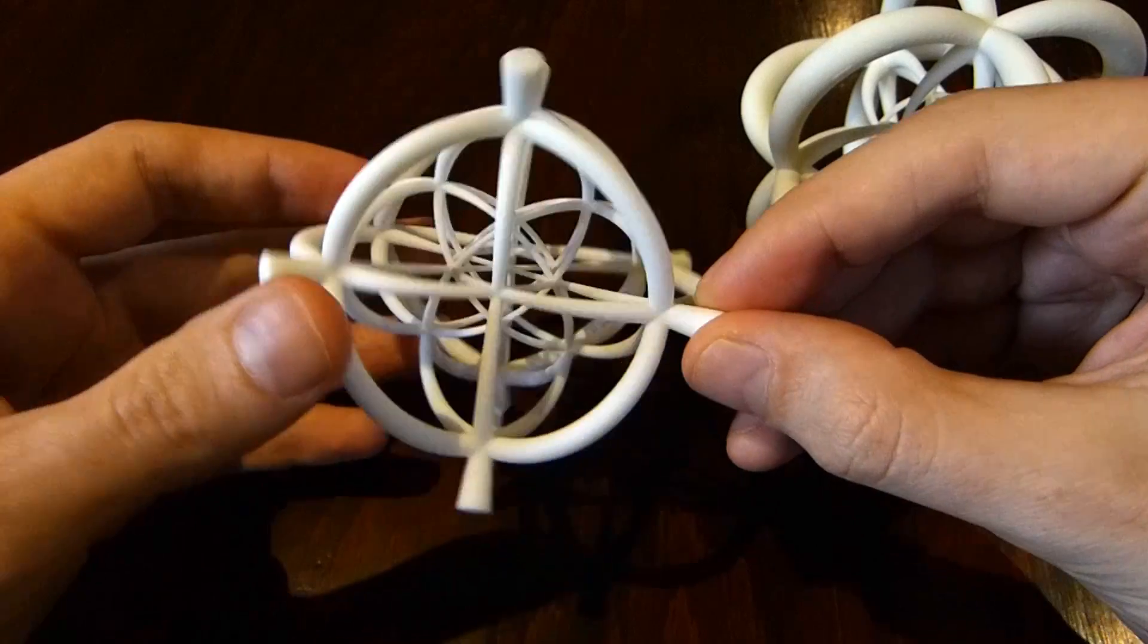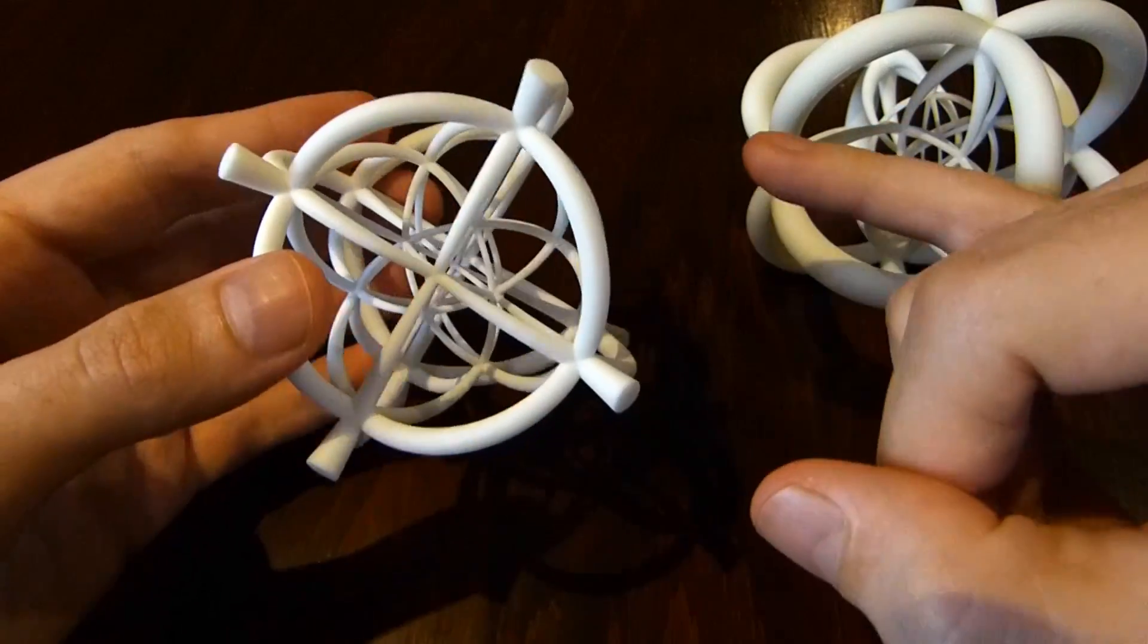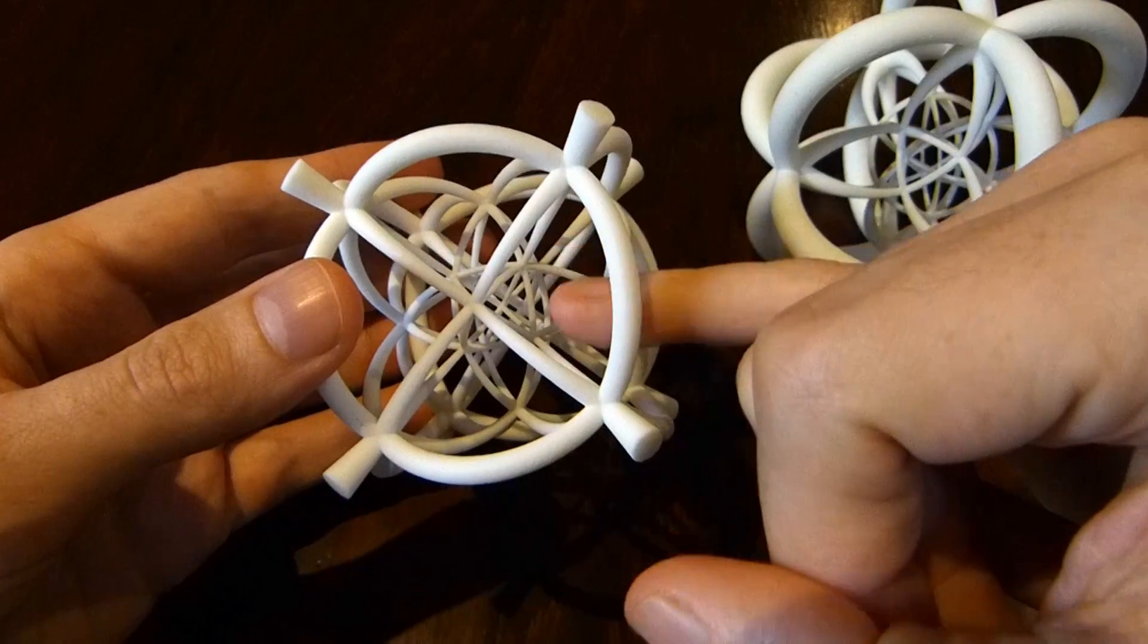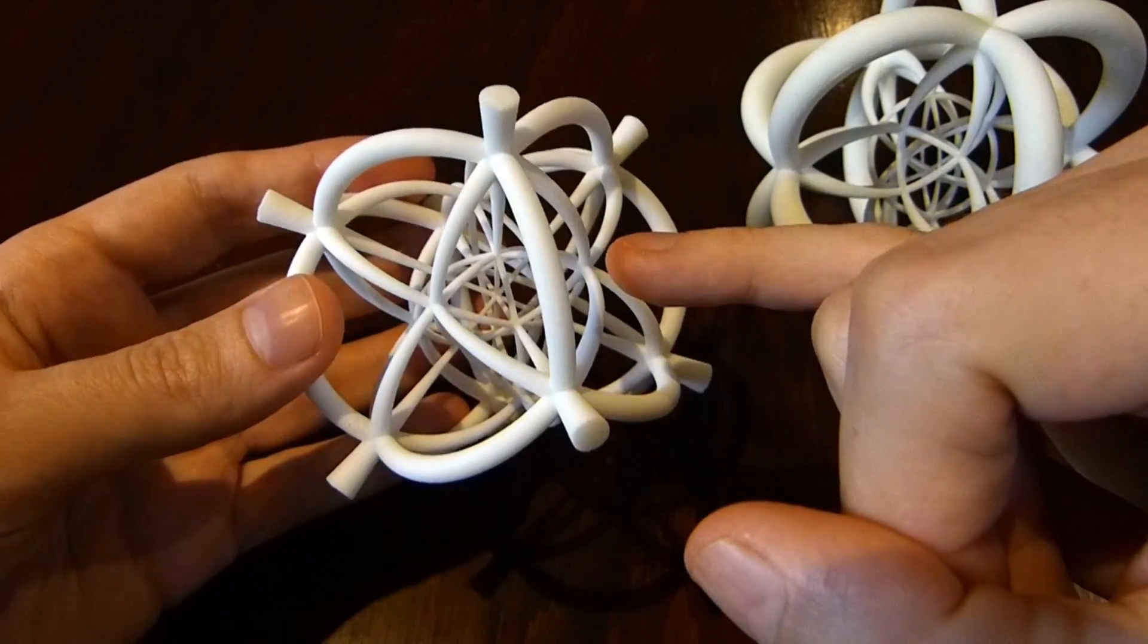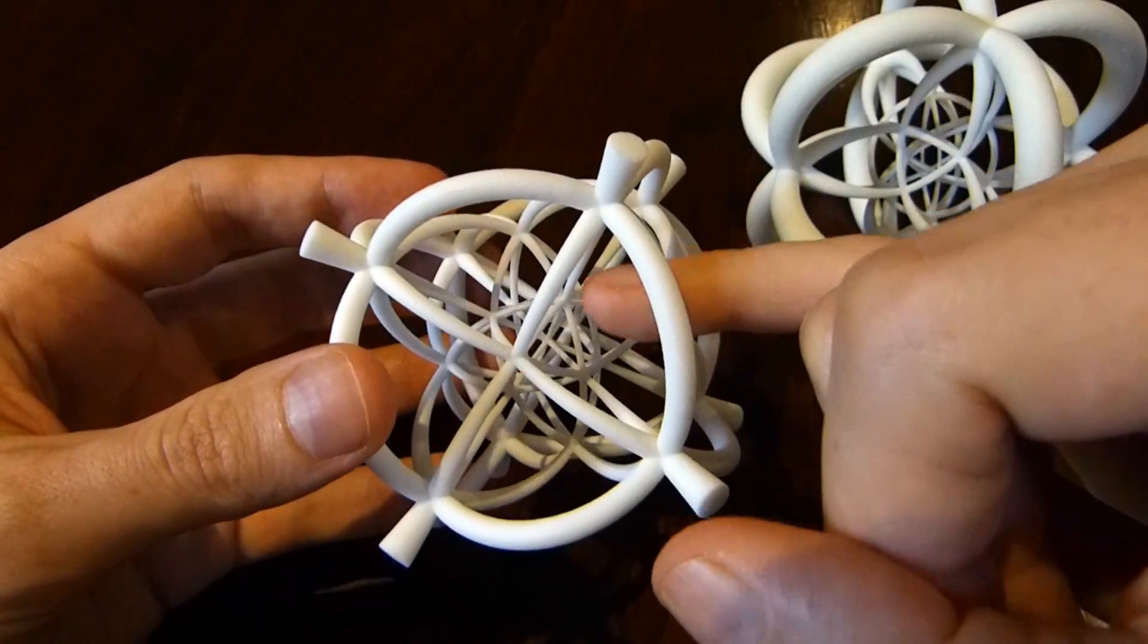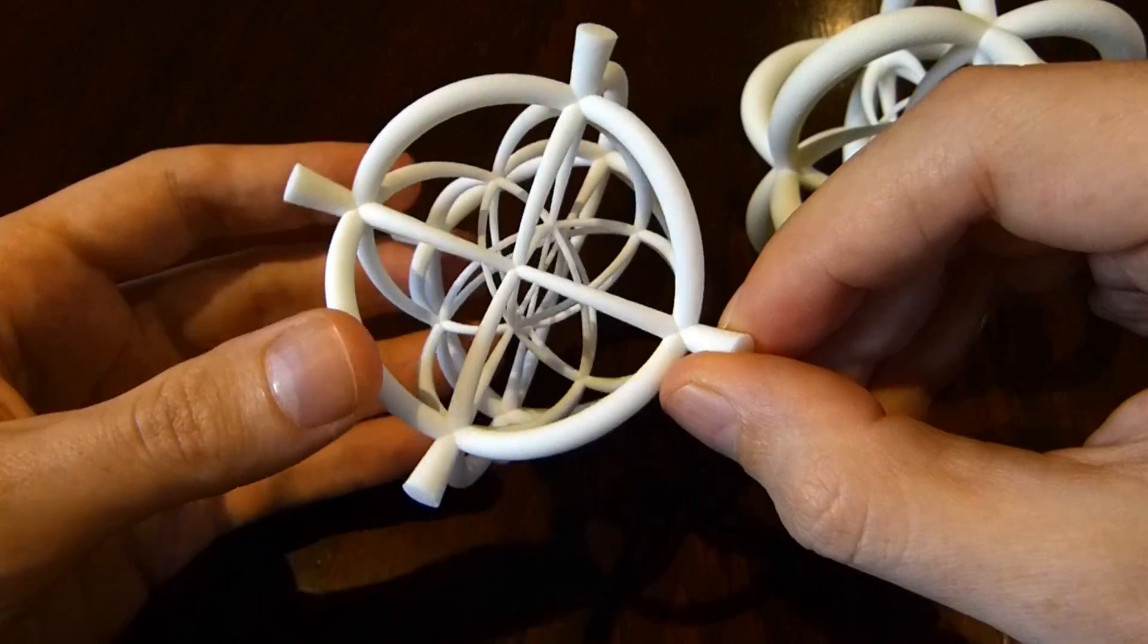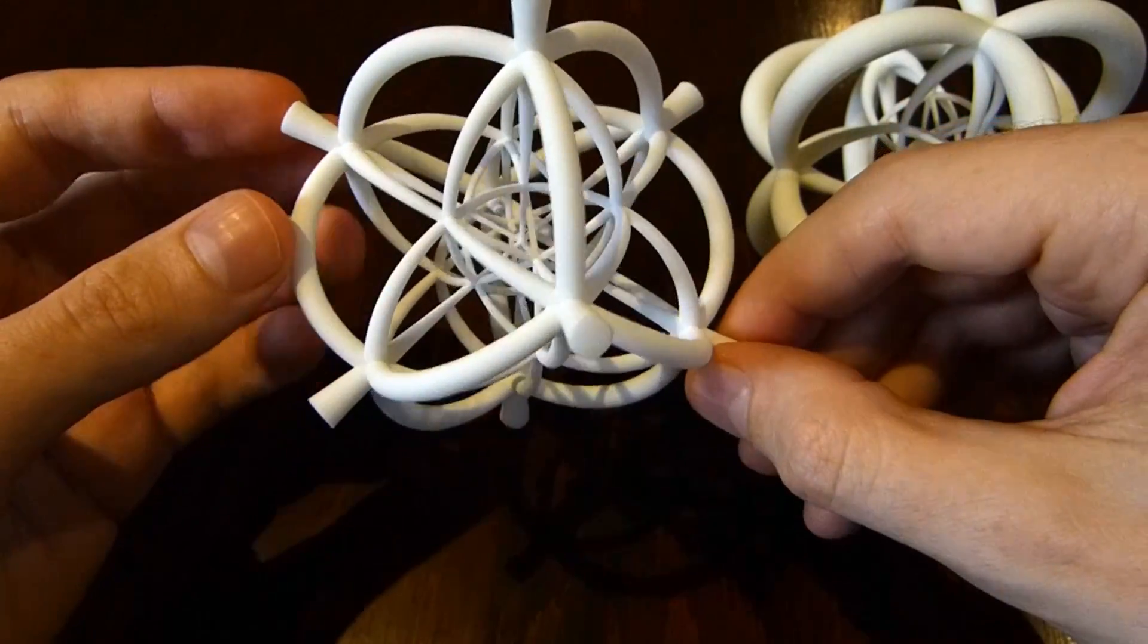It's called the 24-cell because it has 24 octahedral faces, or cells. So you can see one of the cells here. This is an octahedron. It has one, two triangular faces on the outside. You can see the other six triangular faces on the inside. And in fact, each one of the cells is an octahedron.